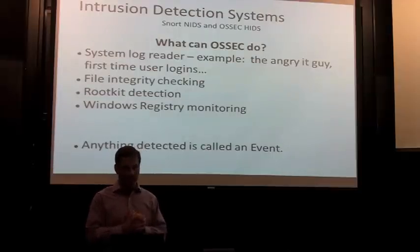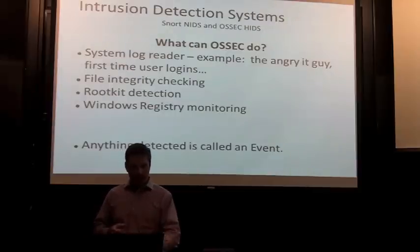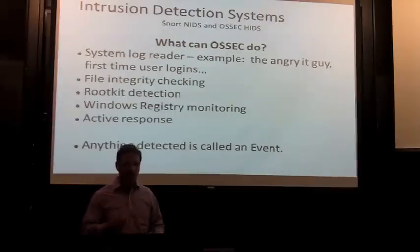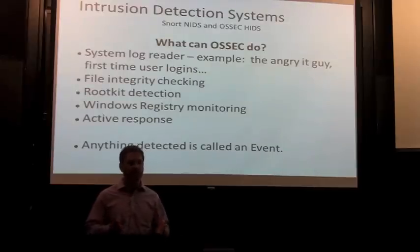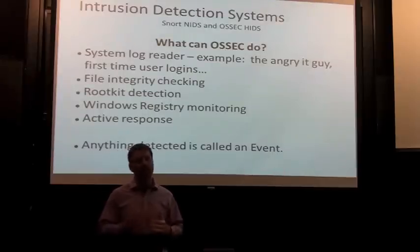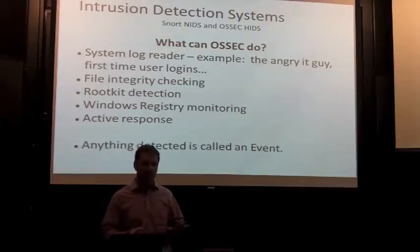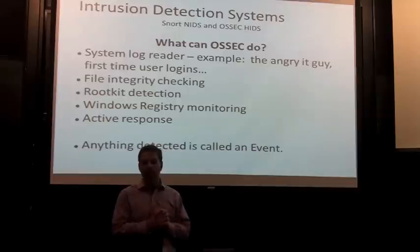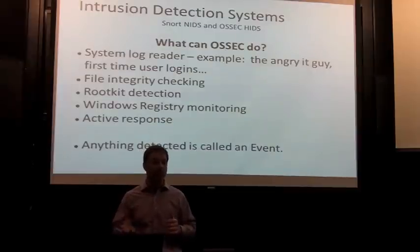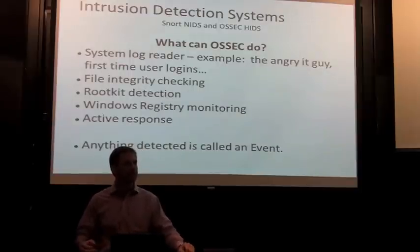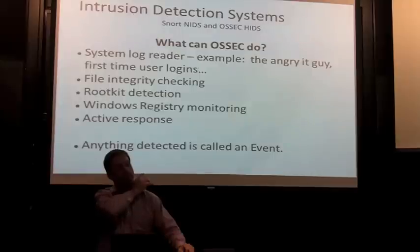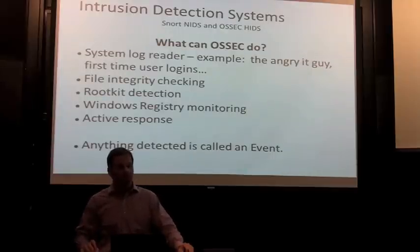OSSEC also has a built-in file integrity checker — when you install it, it builds a checksum for every system file, and notifies you when a file changes. It also detects rootkits, which an intruder might install to persist in your network. Registry monitoring on Windows will report registry changes. And OSSEC now has active response for both Linux and Windows — if it detects something, it can shut off services or block IP addresses.